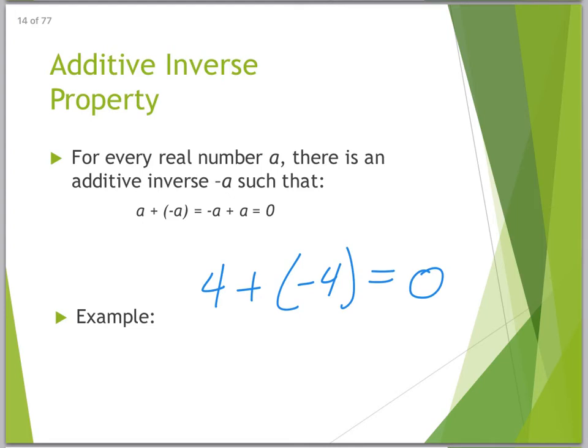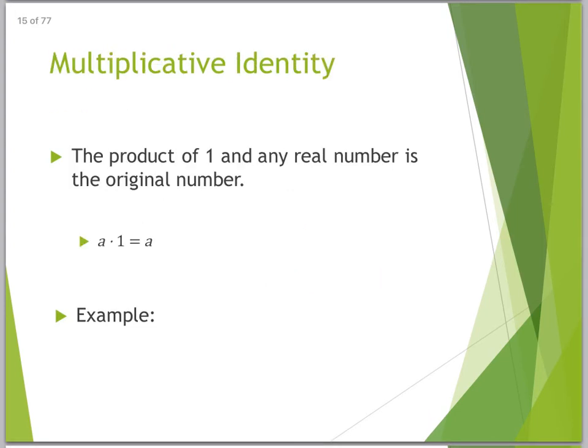Additive identity property. Multiplicative identity. The product of 1 and any real number is the original number. Sorry, I didn't mean to laugh, but that's one of those things you're like, duh, I might have learned this before. So what I'm saying is 3 times 1 is still 3. Nothing changed.